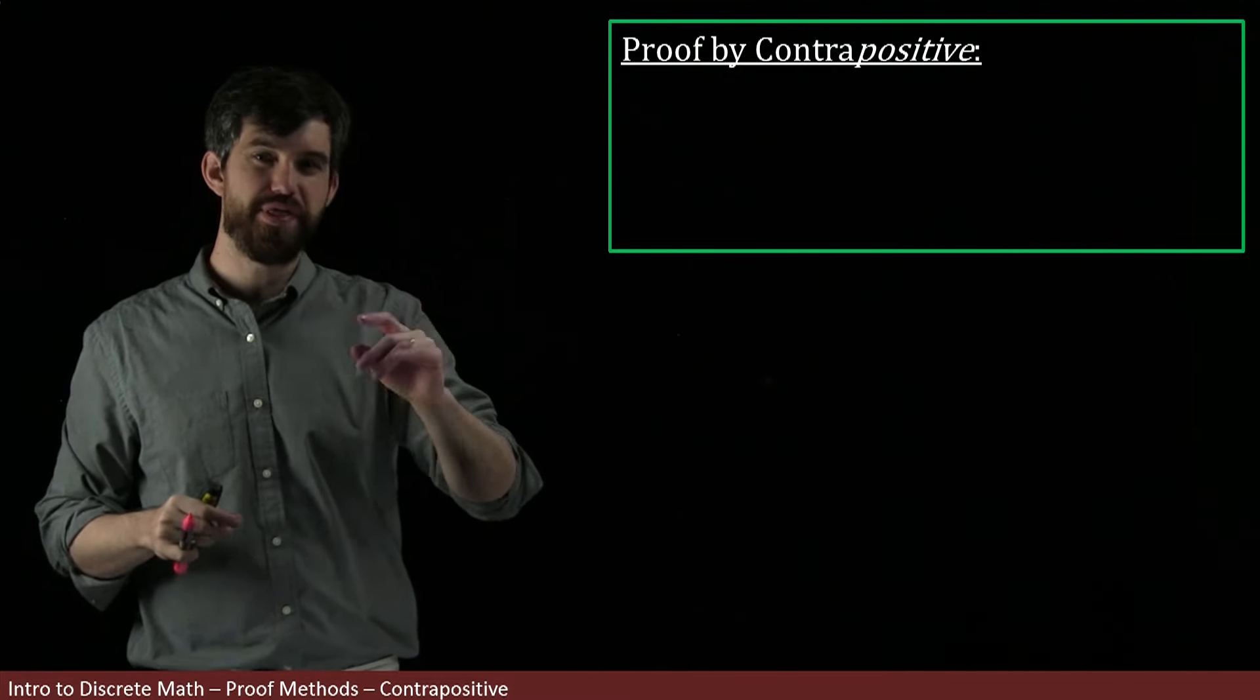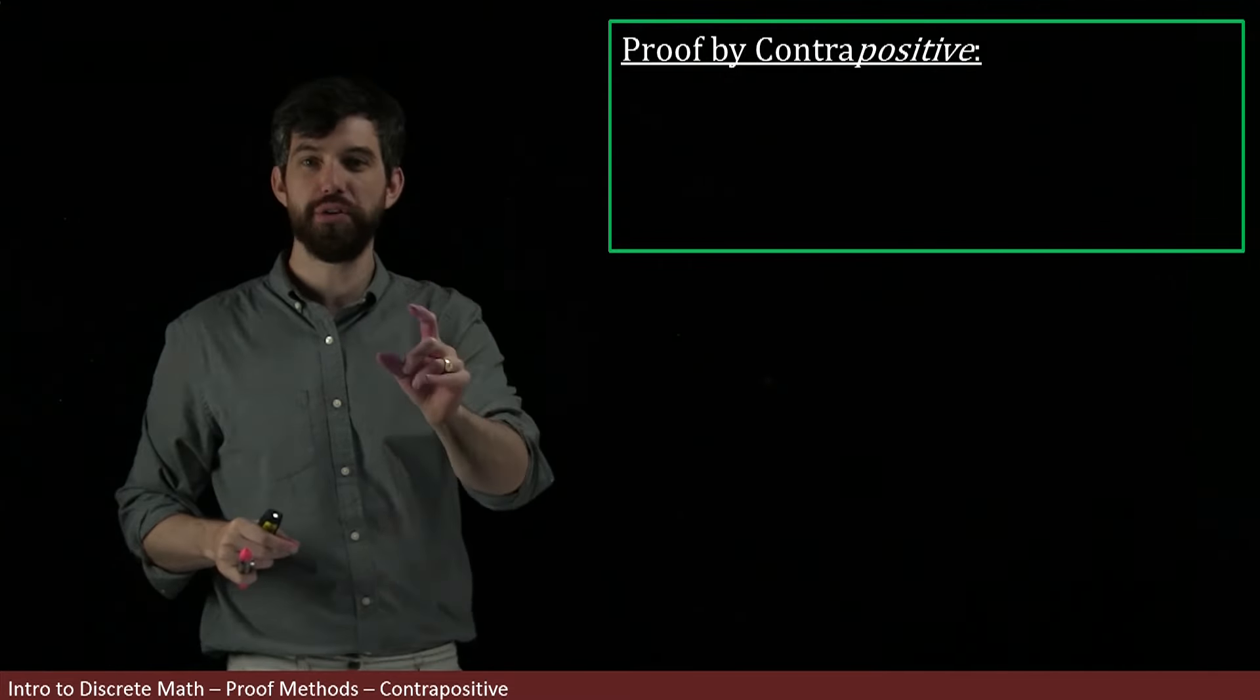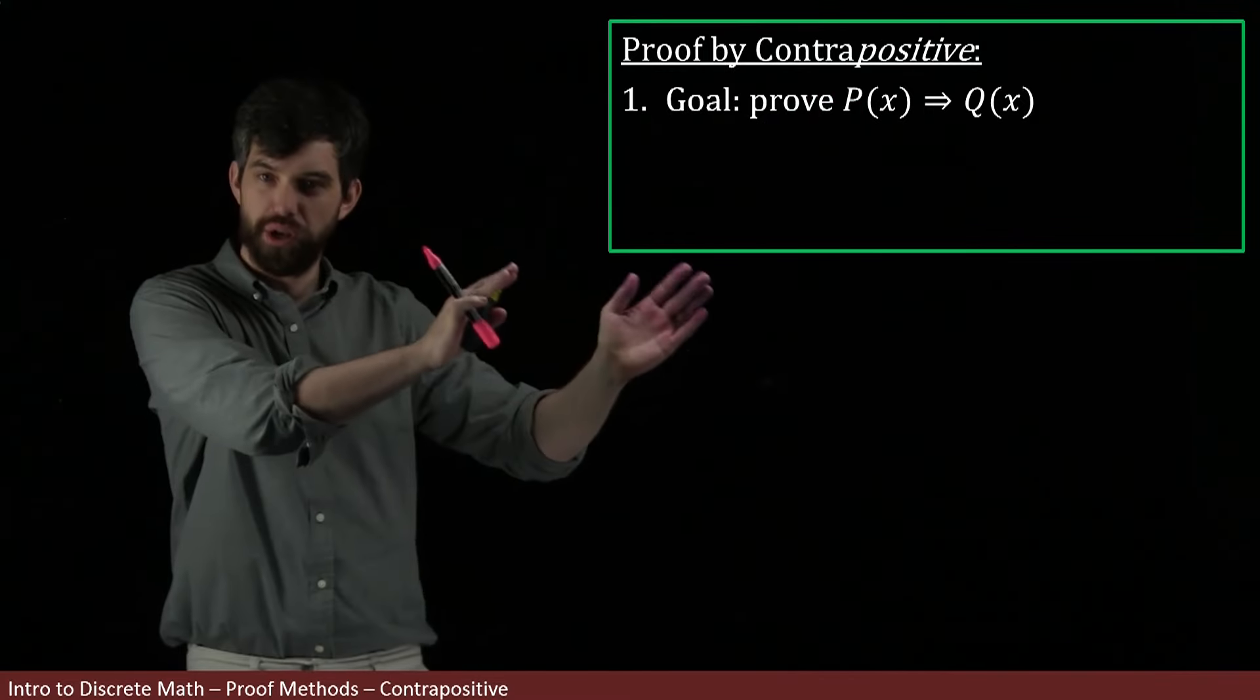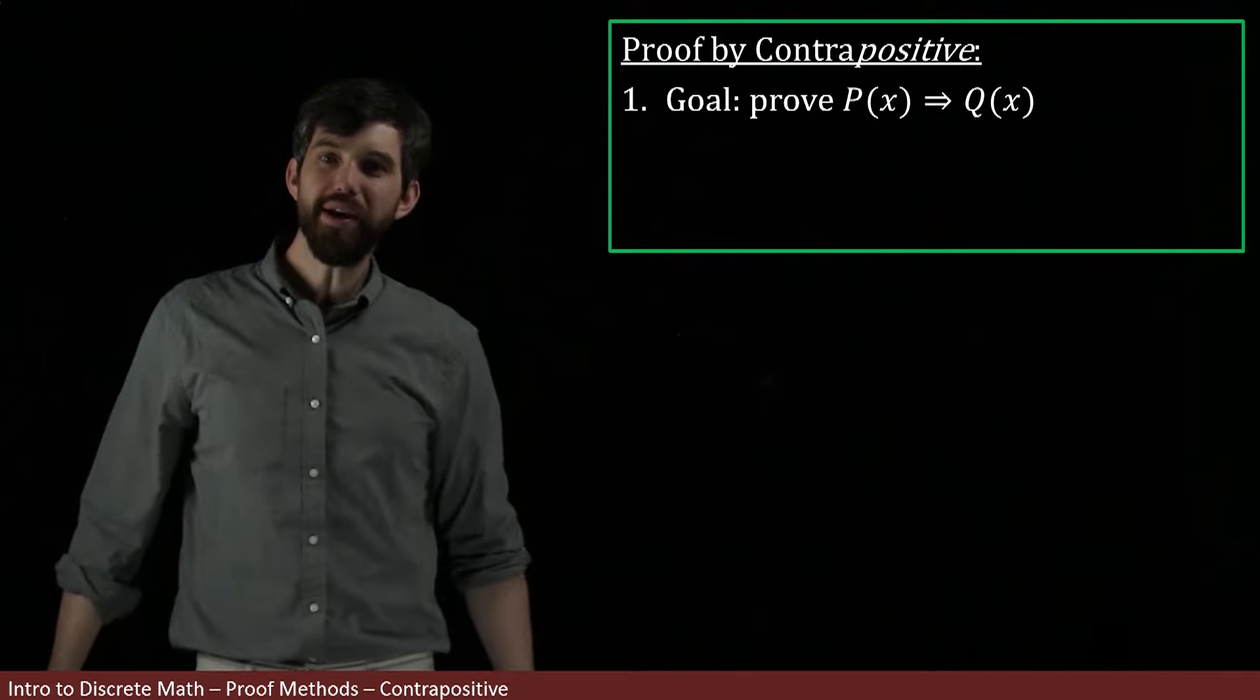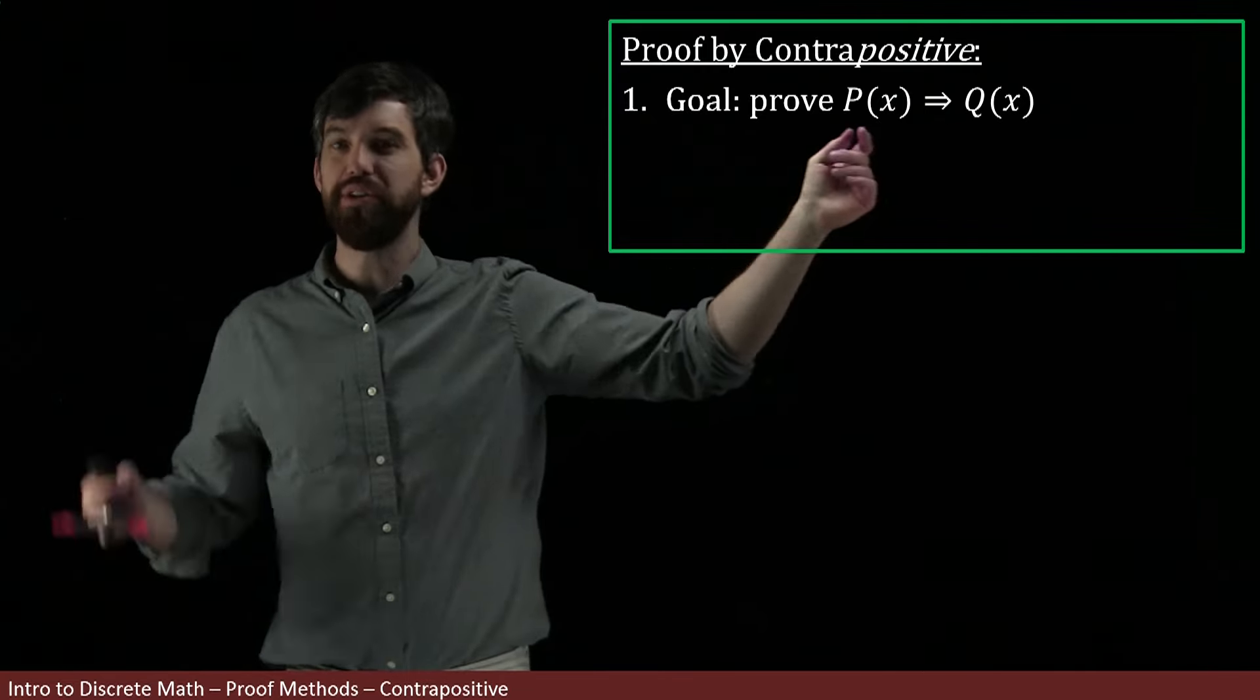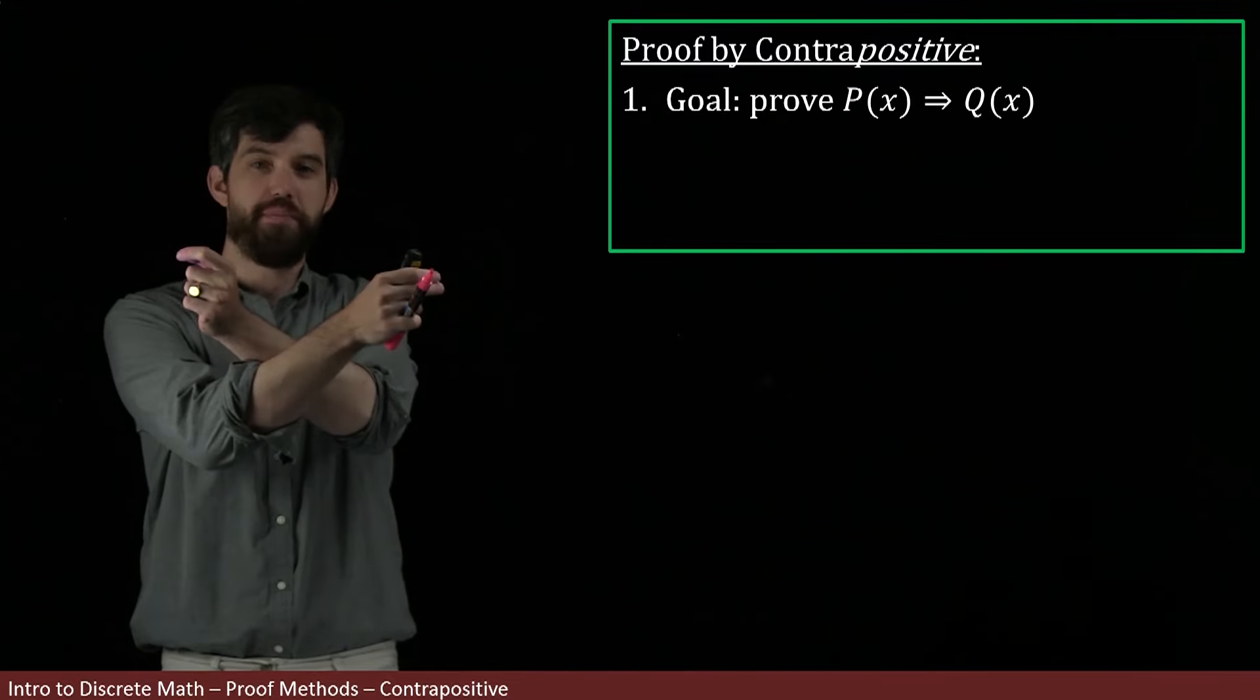So I'm going to make use of that logical equivalency when I try to prove things. In particular, my first goal is to prove an implication - I'm trying to prove an assumption leads to a conclusion. But what I'm going to do is treat this the other way around. I know that P implies Q is the same thing as not Q implies not P.